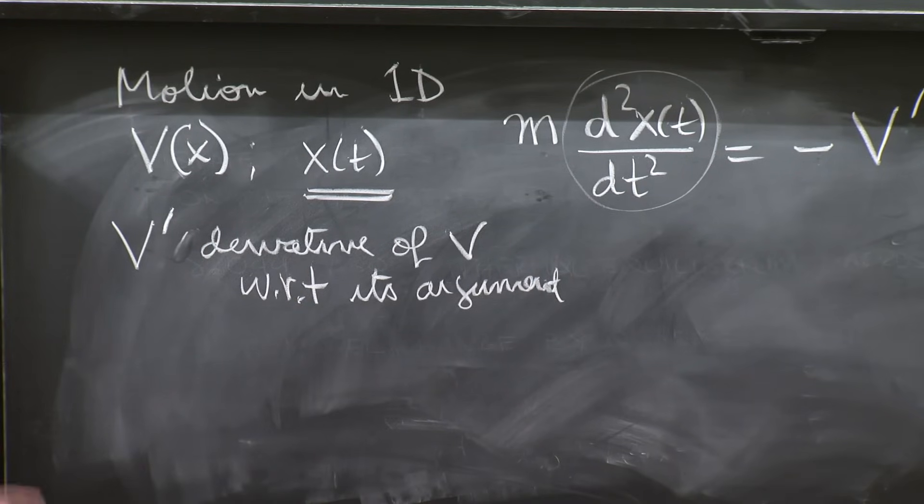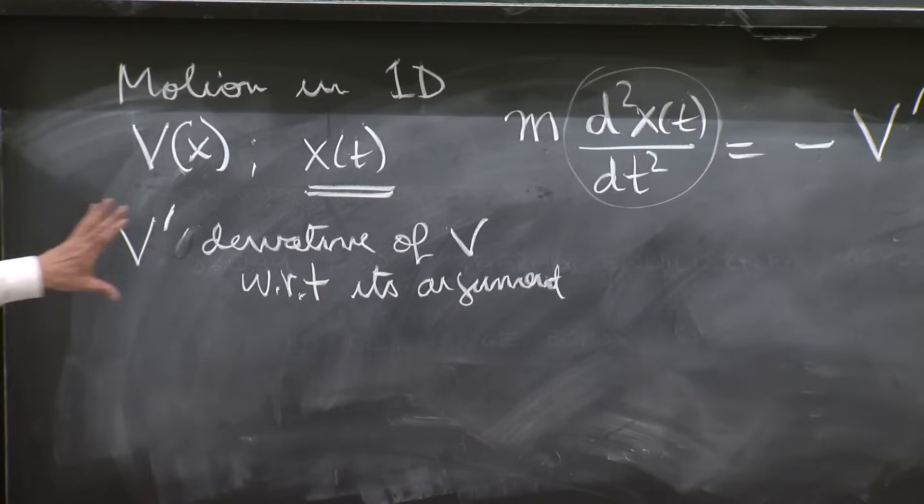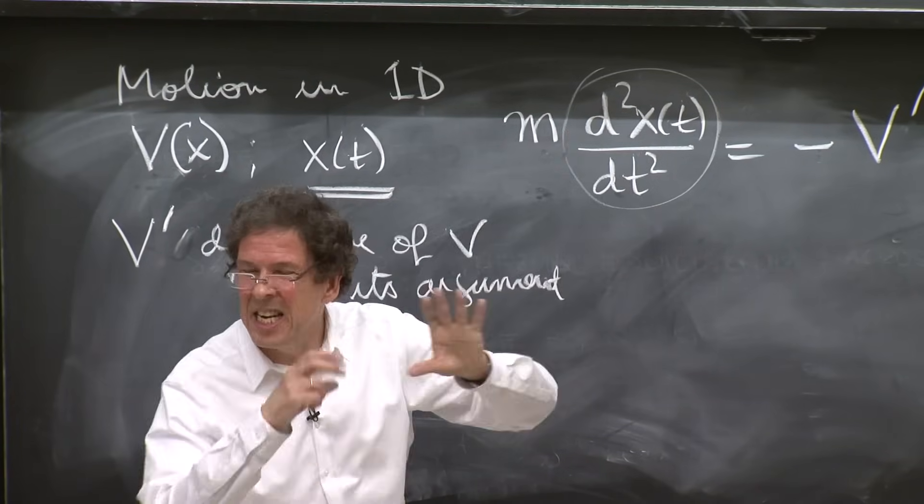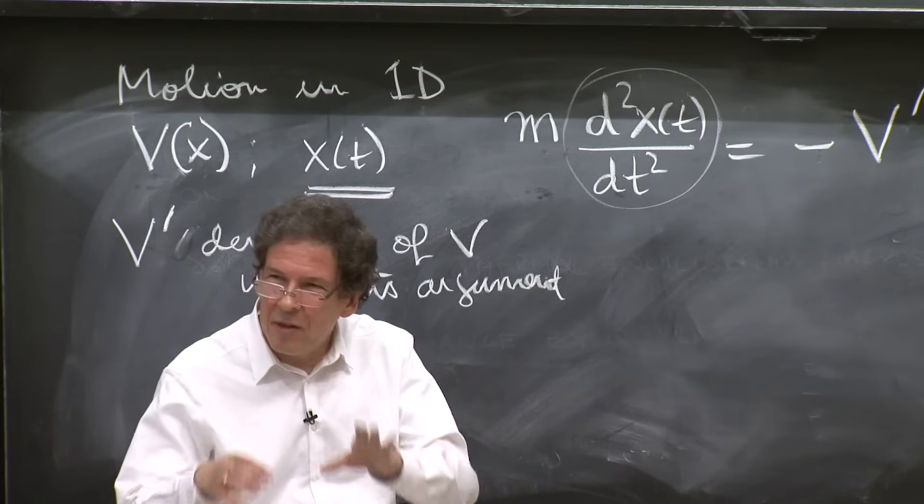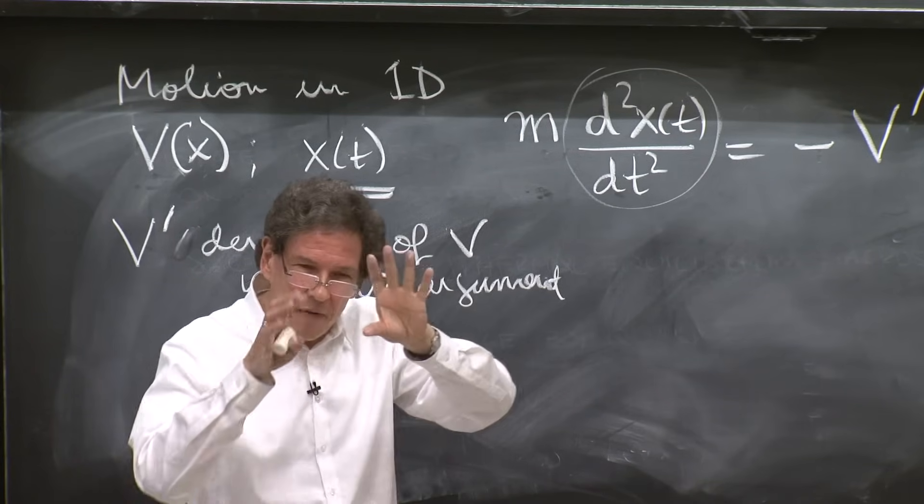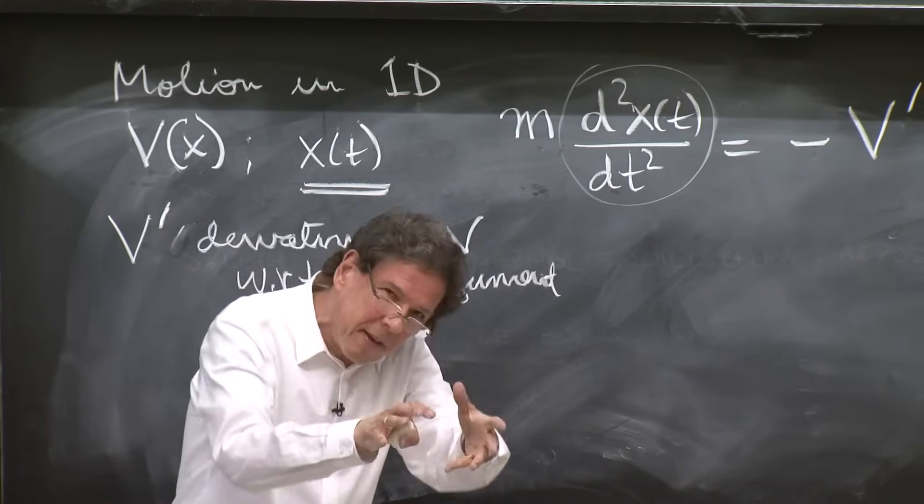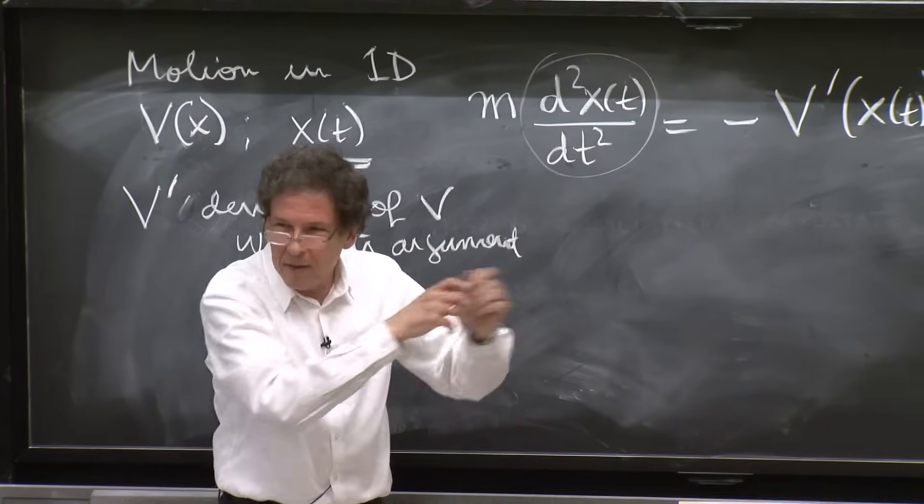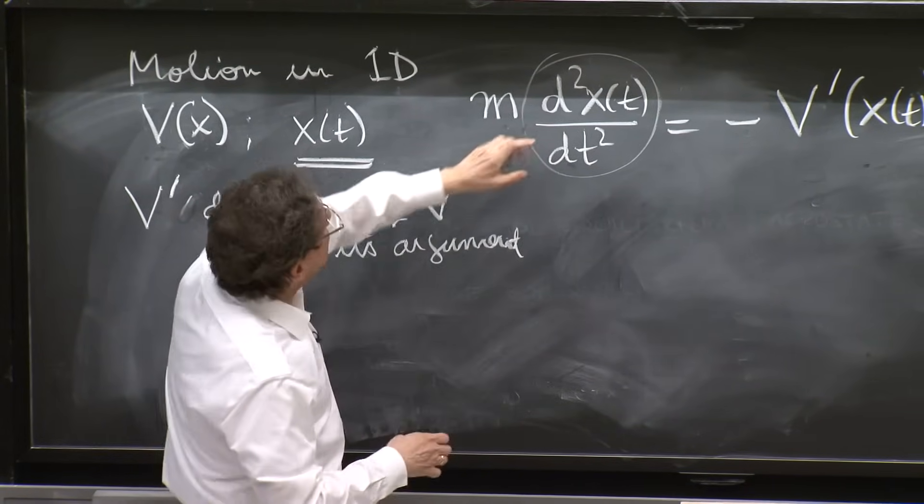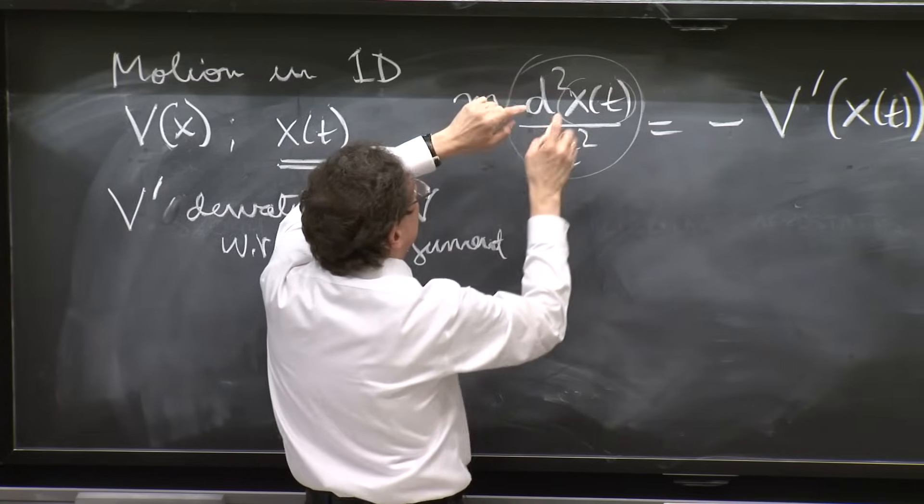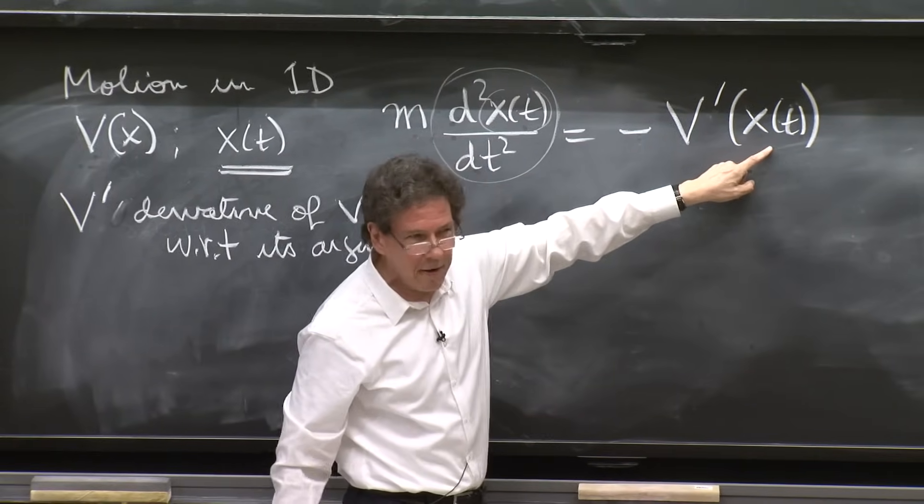And the problem is that while this, taking derivatives, is a linear operation, if you take two derivatives of a sum of things, you take two derivatives of the first plus two derivatives of the second. But yes, this side is linear.